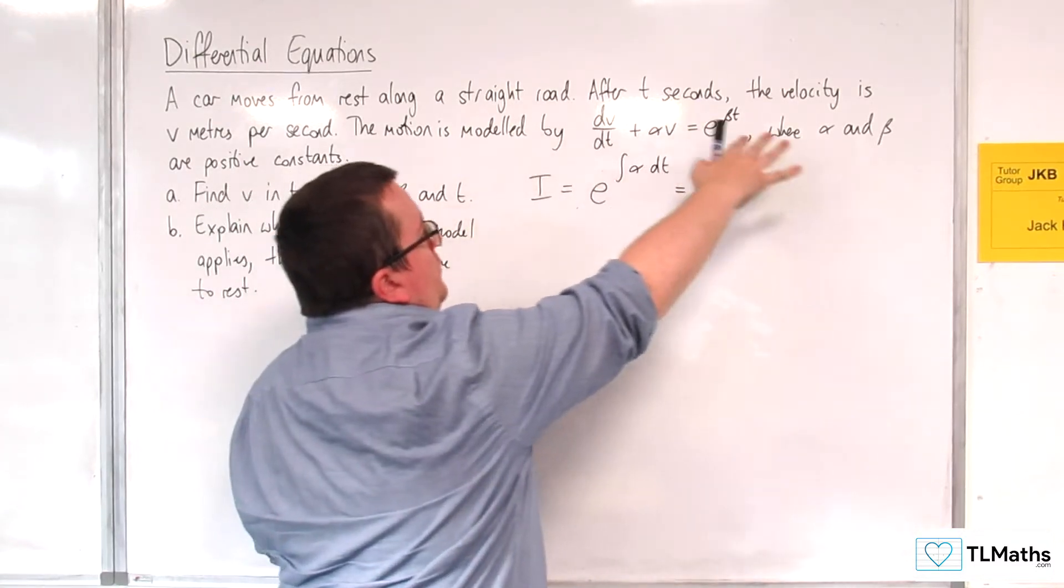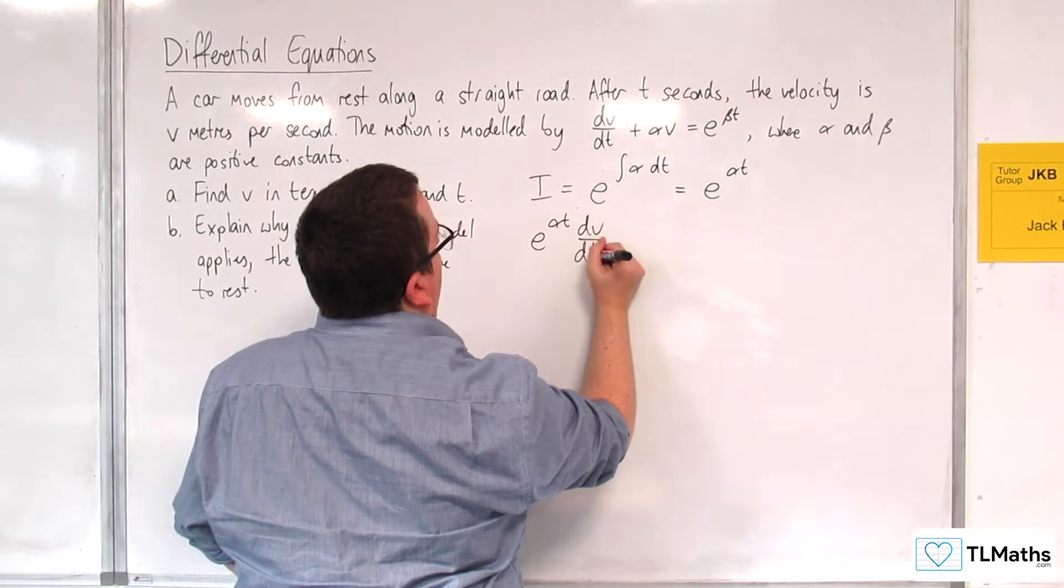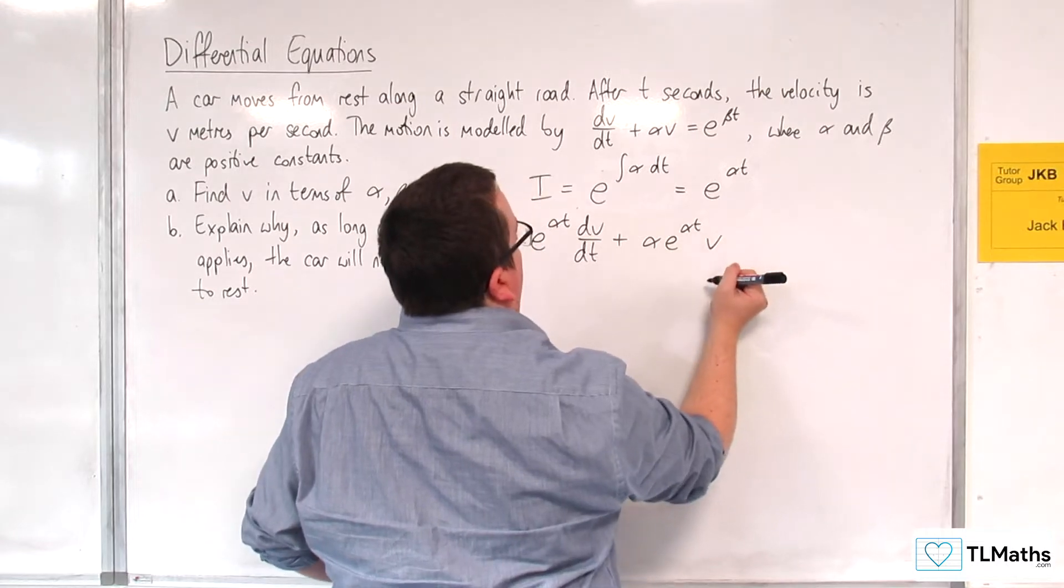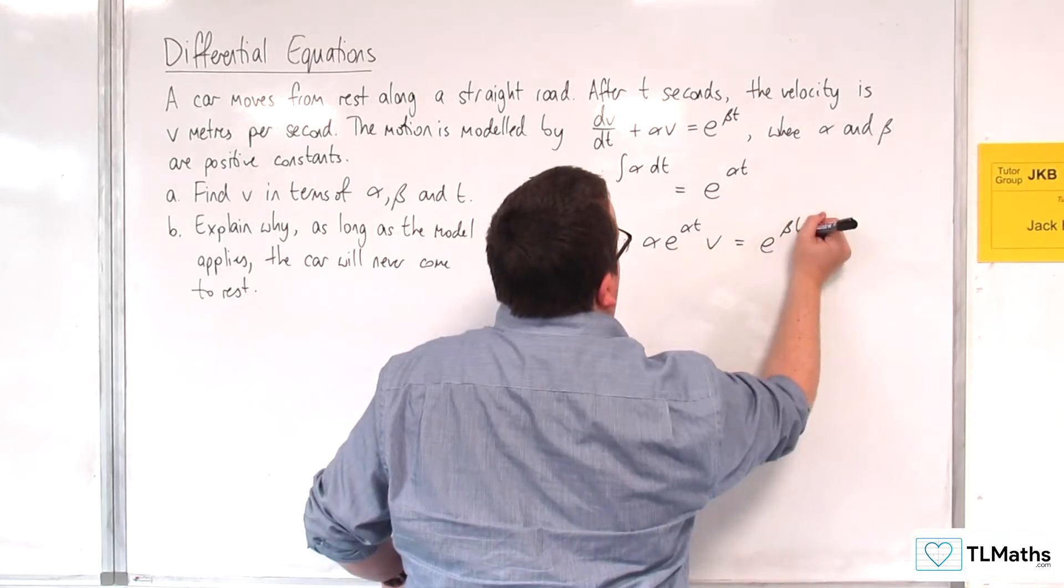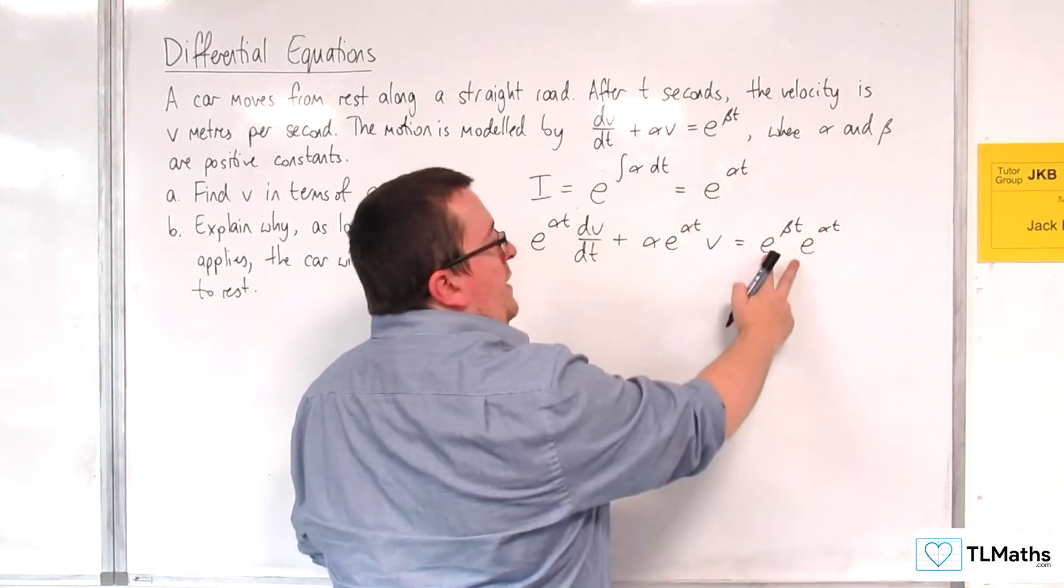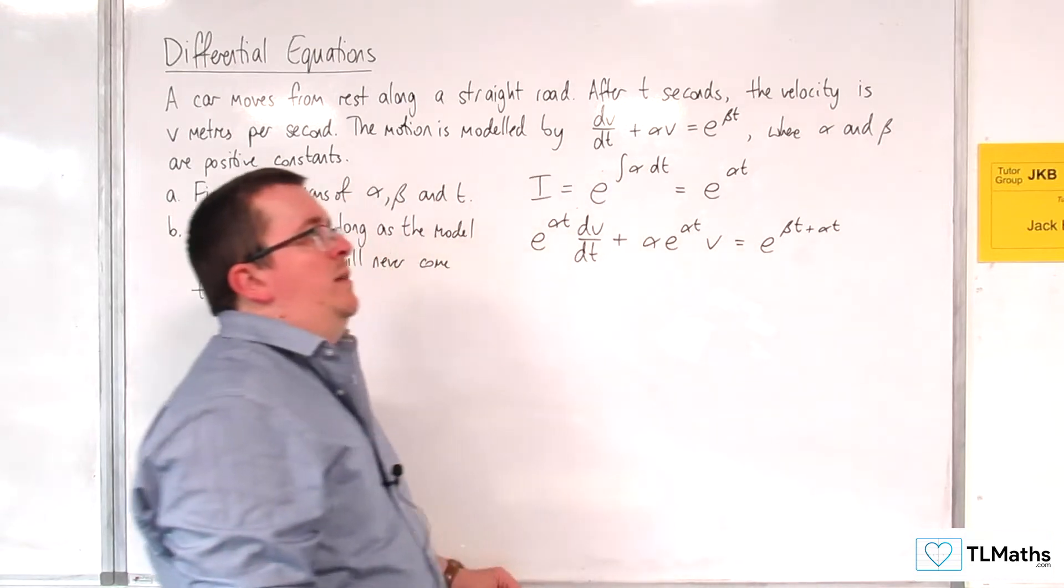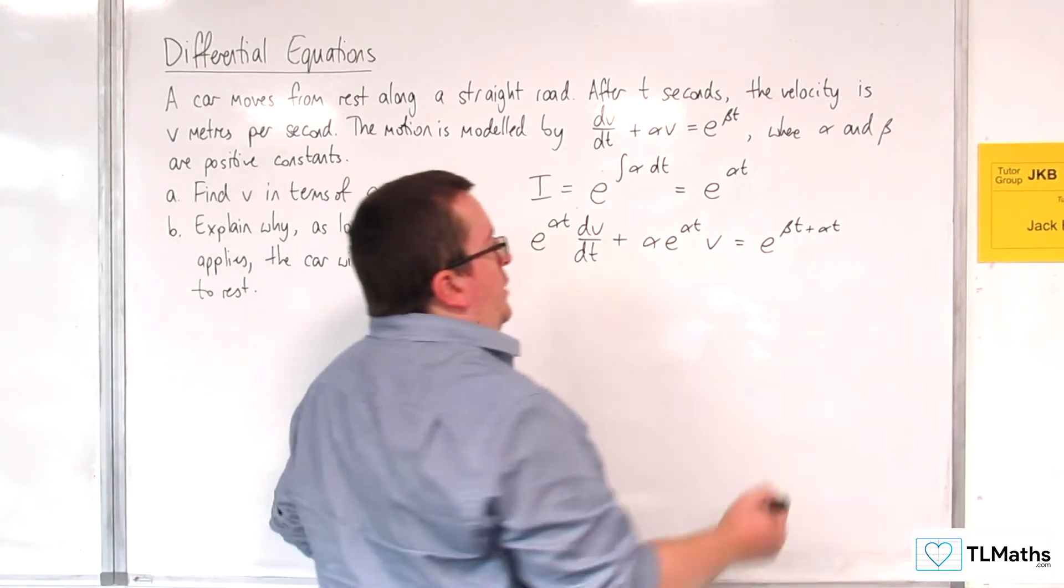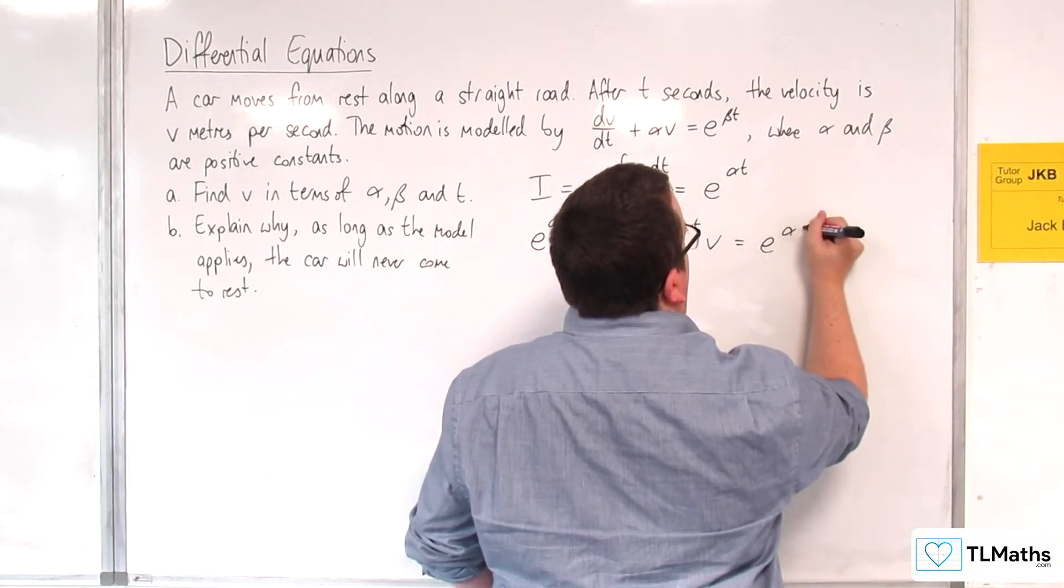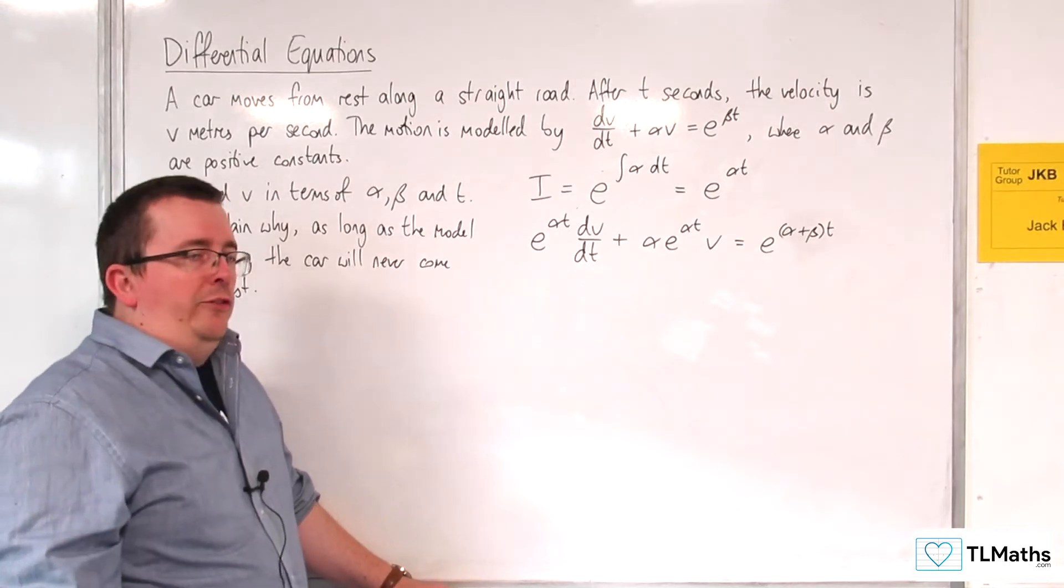Now, I'm going to multiply through my differential equation by e^(αt). So I would get e^(αt)·dv/dt plus α times e^(αt)·v equals e^(βt) times e^(αt). Now, this side, I can rewrite that as e^(βt + αt), which I could also write as, factoring out the t, e to the power of (α+β) times t. So that's probably the neatest way to write it.